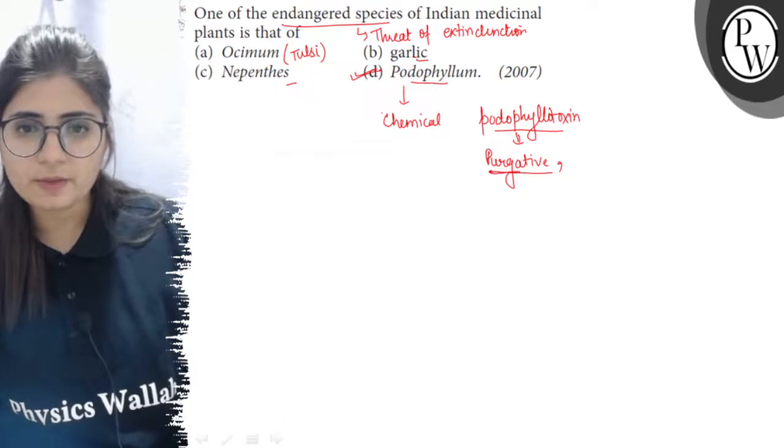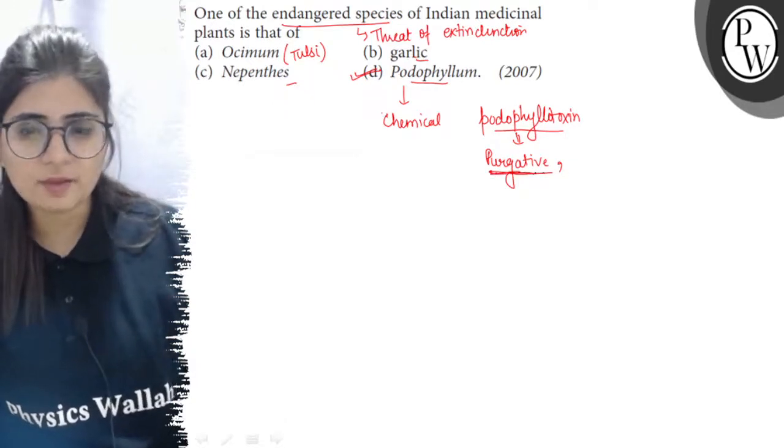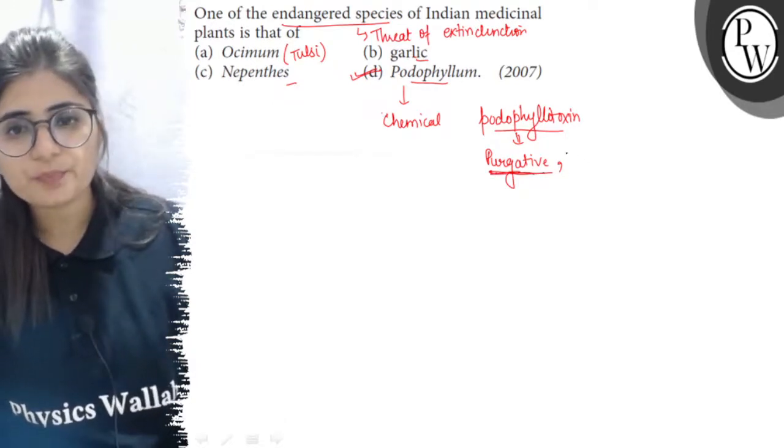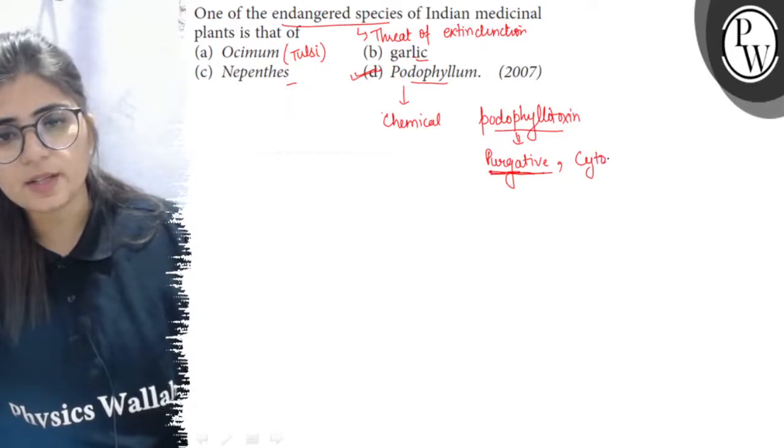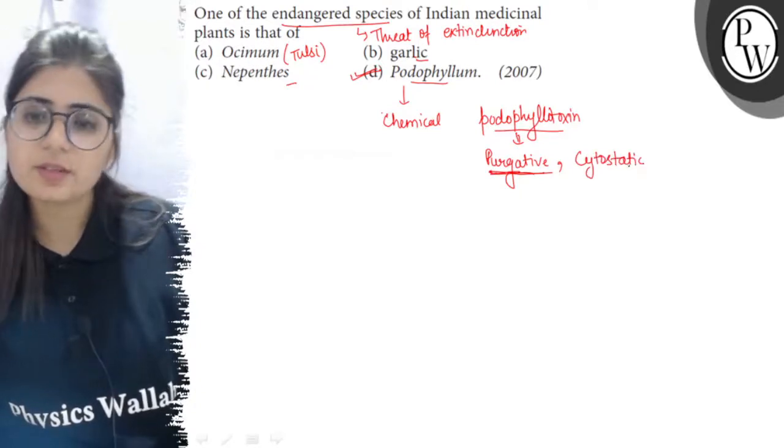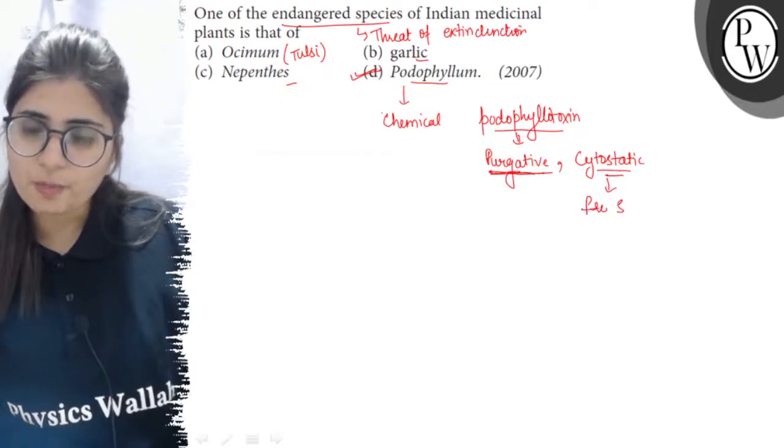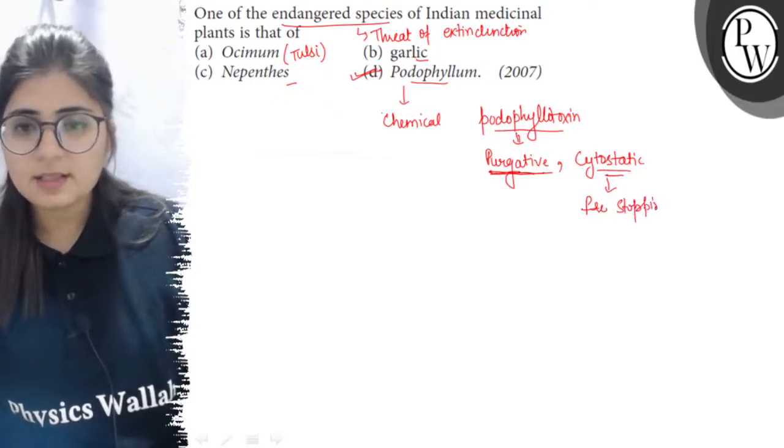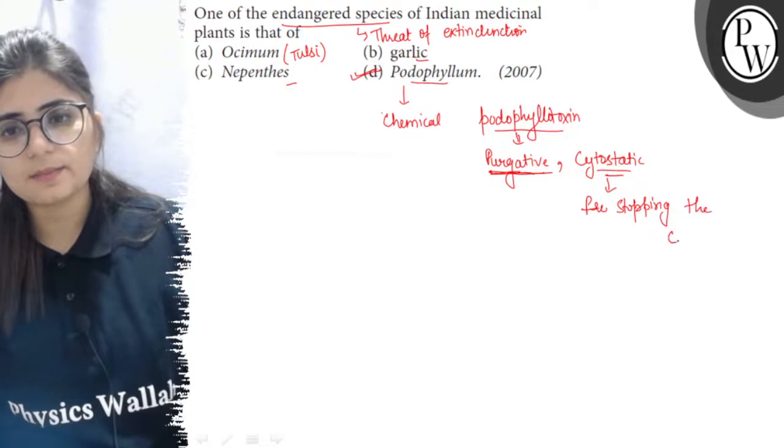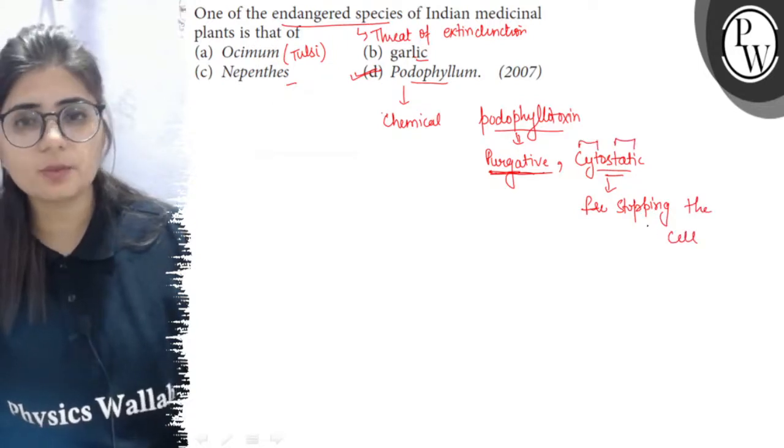It is used for preventing or stopping cell division. Cyto means cell, and static means to prevent, so cytostatic means to stop cell division.